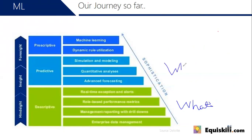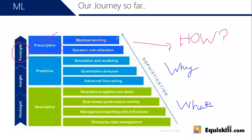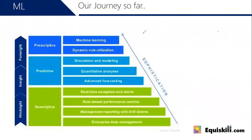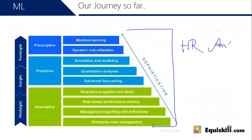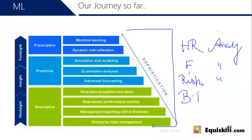Descriptive analytics describes what's going on, predictive analytics explains why it's happening, and if you want to prescribe how to proceed in the future — that's prescriptive analytics, also known as machine learning, deep learning, artificial intelligence, or dynamic rule utilization. It's about taking human beings out of the decision-making and letting computers do it. Any of these analytics applied in HR becomes HR analytics; in finance it becomes financial analytics; applied on huge datasets it becomes big data analytics.